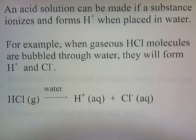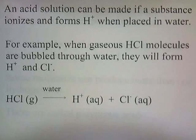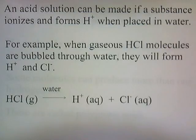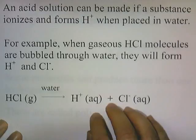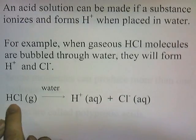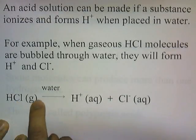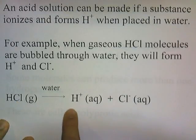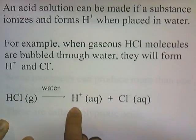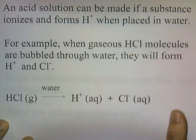An acid solution can be made if a substance ionizes and forms hydrogen ion when placed in water. For example, when gaseous HCl molecules are bubbled through water, they will form H+ and Cl-. When you bubble HCl through water, it will produce H+ and Cl-, and the presence of the H+ is what makes the water an acidic solution.